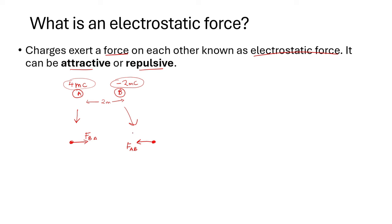Remember, the word 'attract' just means pulling closer. So because these two charges are oppositely charged, A is pulling B and B is also pulling A. It depends which free body diagram you are drawing: for A, the arrow faces to the right because B is pulling A to the right; and for B, the arrow faces to the left because A is pulling B towards itself.